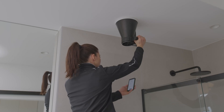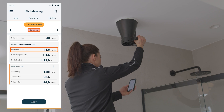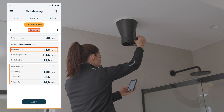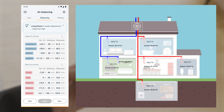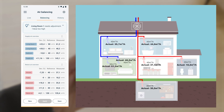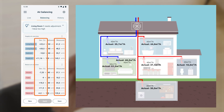The measurement is continued for all other outlets. Once all outlets have been measured, the first round of measurements is complete. The app clearly displays all recorded measured values with percentage and absolute deviation.